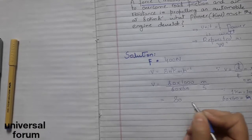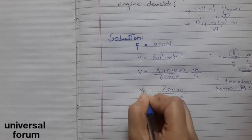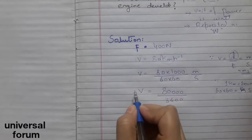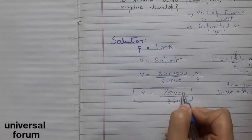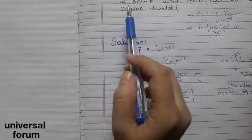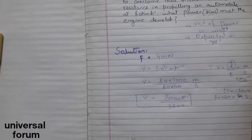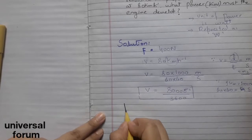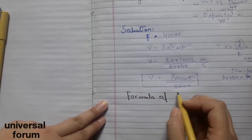So 80,000 divided by 3,600. This is the force and this is the velocity. We can define the power in kilowatts. What is the formula of power?